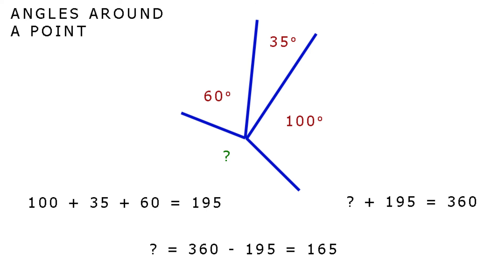Adding the three given angles, 100 plus 35 plus 60, we get 195 degrees. So you must ask yourself, what do you add to 195 degrees to make 360 degrees? To find that, you must take the 195 from the 360, right? So the missing angle is 165 degrees.